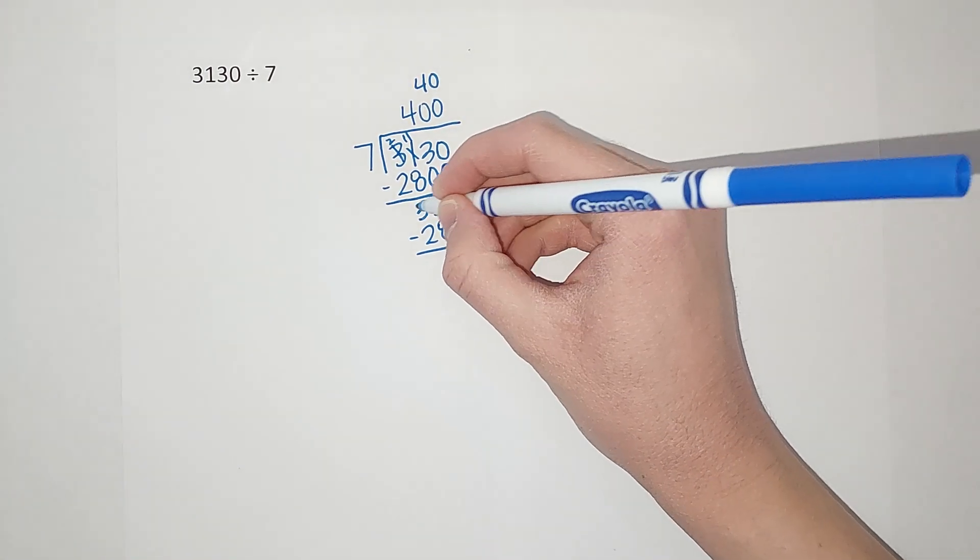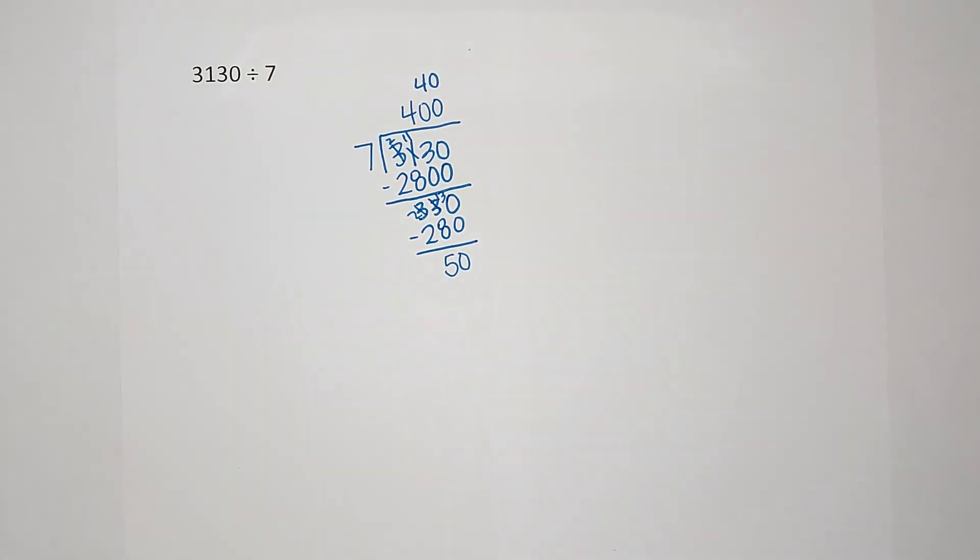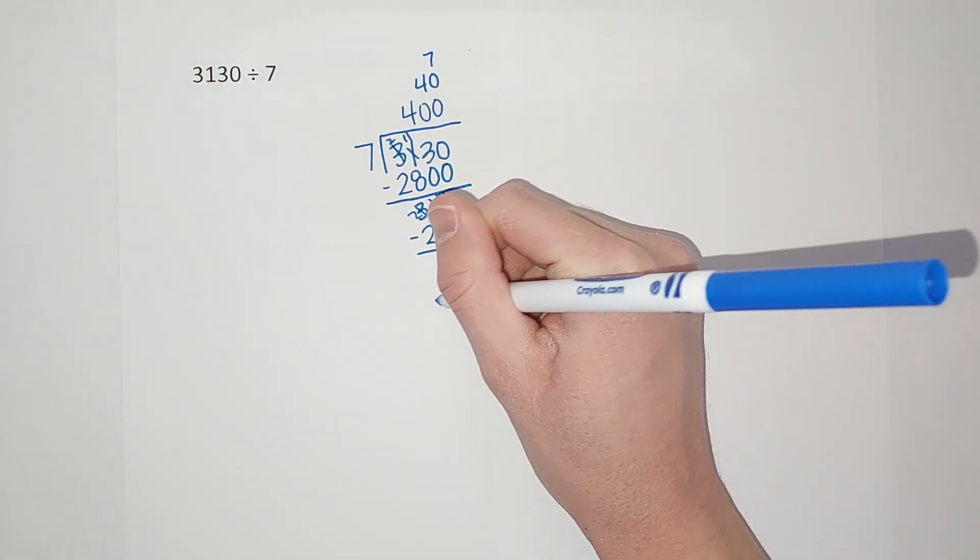And this is when I'm like, oh, seven times seven is 49, right? So I'm gonna take out seven more sevens. Seven times seven gives me 49.